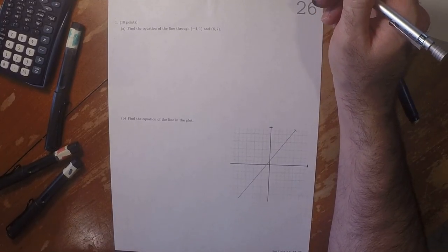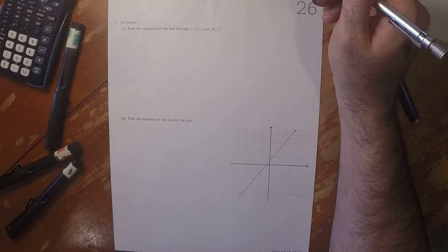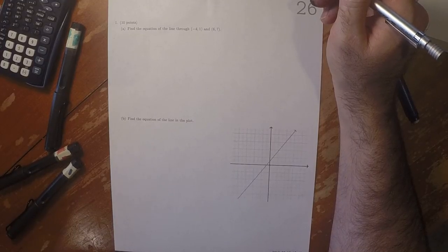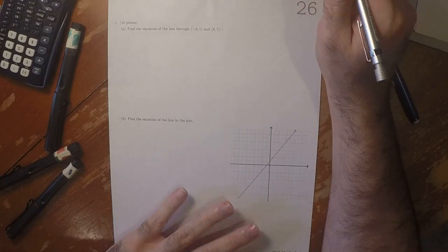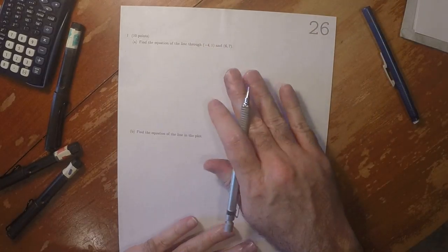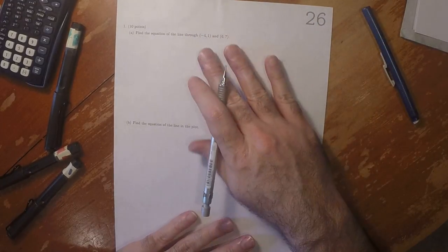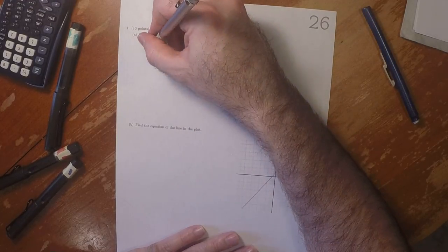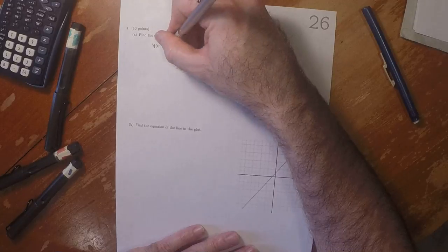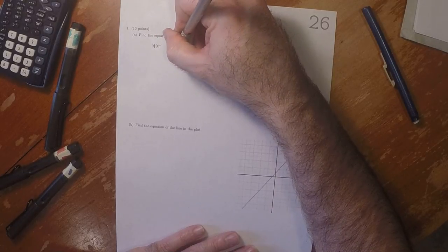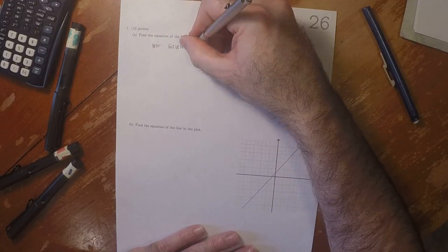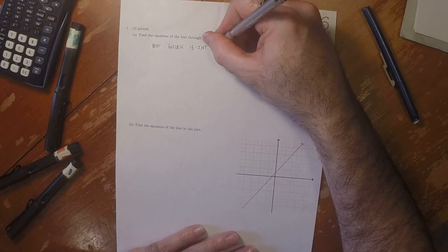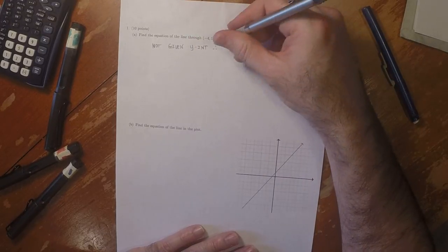This is the solution to written homework 26. We need to find the equation of the line through those two points. We were not given a y-intercept, so we're going to end up